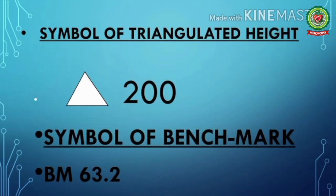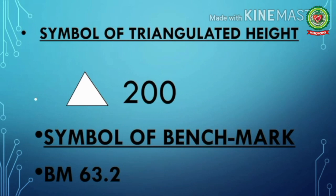Next we have triangulated height, which means the height of a prominent place shown by a triangle followed by a number — for example, a triangle with the number 200. This symbol is mostly used to show the height of high mountains. Next is benchmark, used to show the height of any building or engraved on rock, depicted as BM followed by a number — for example, BM 63.2.